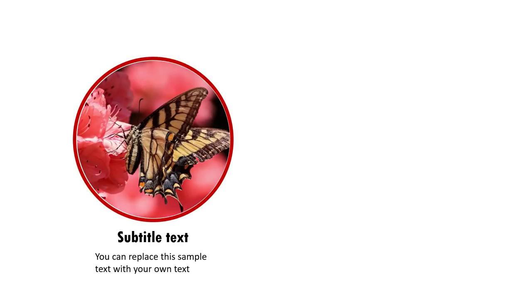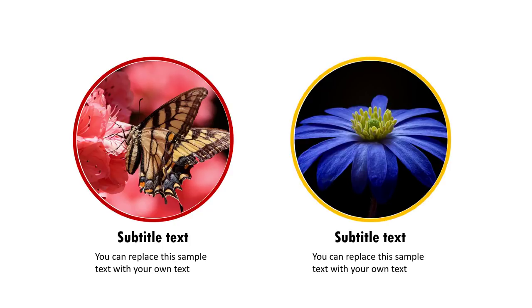On a click, a dot comes, draws a circle, and then introduces the picture and the associated text. Let me give you another example: a dot comes, draws a circle, and then reveals a picture with the text. So this is the effect you will learn to create today — it's a very beautiful effect.